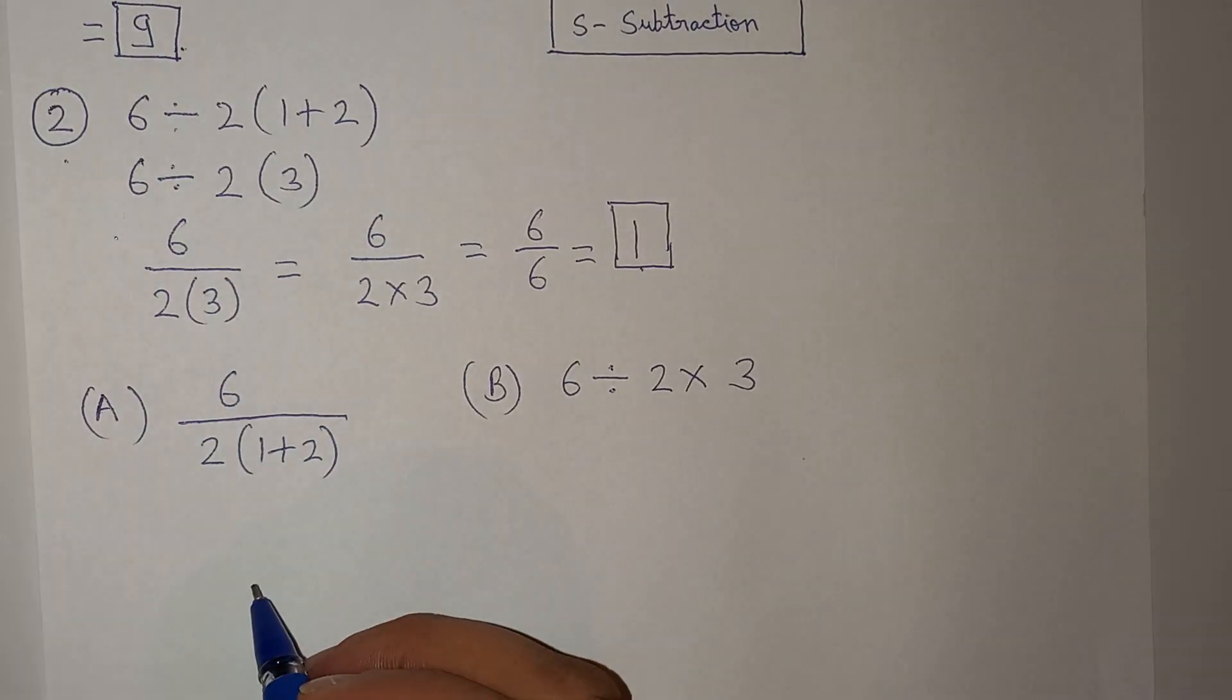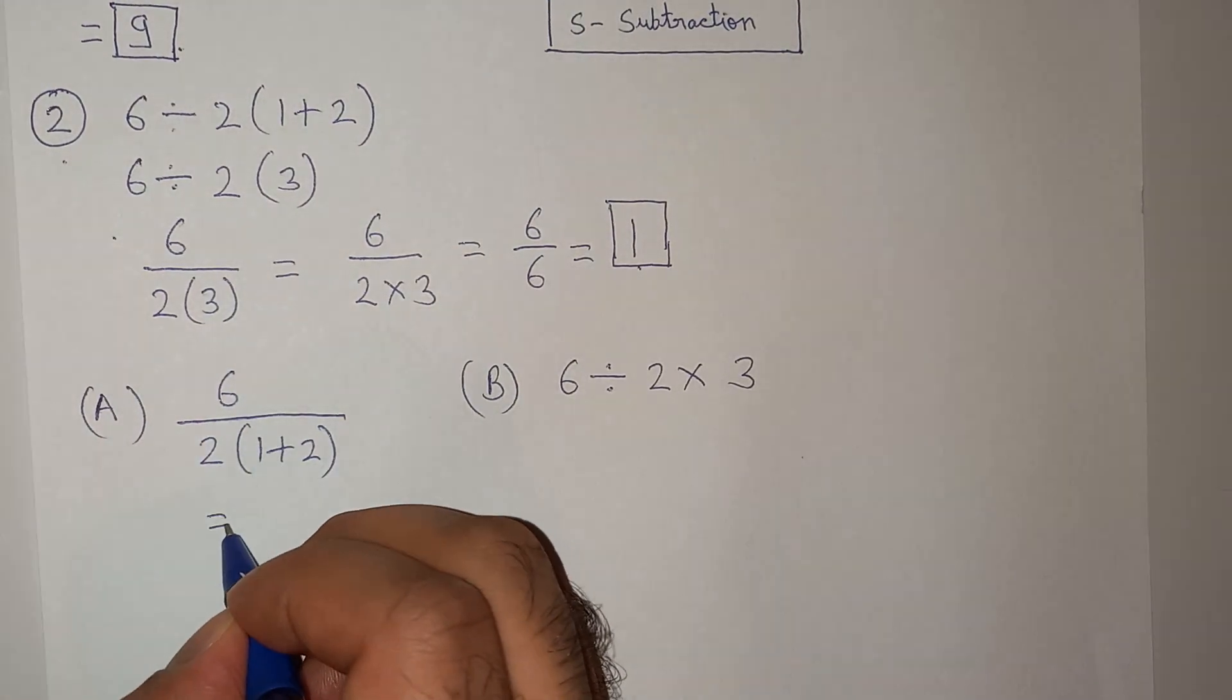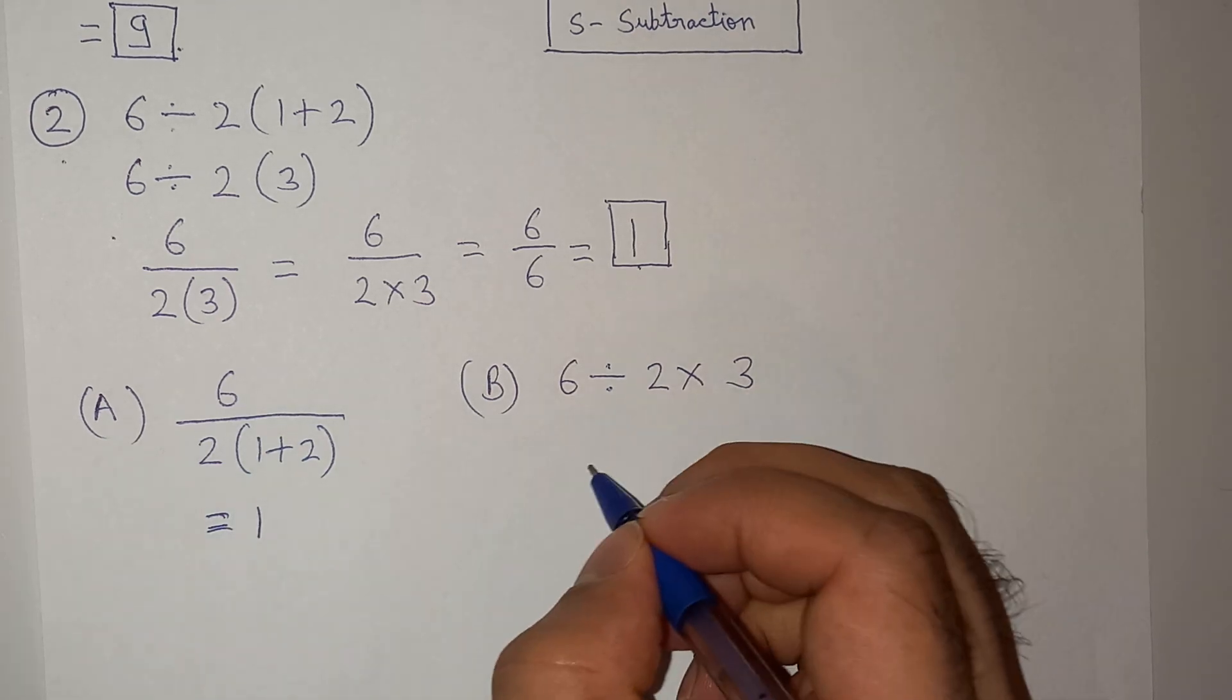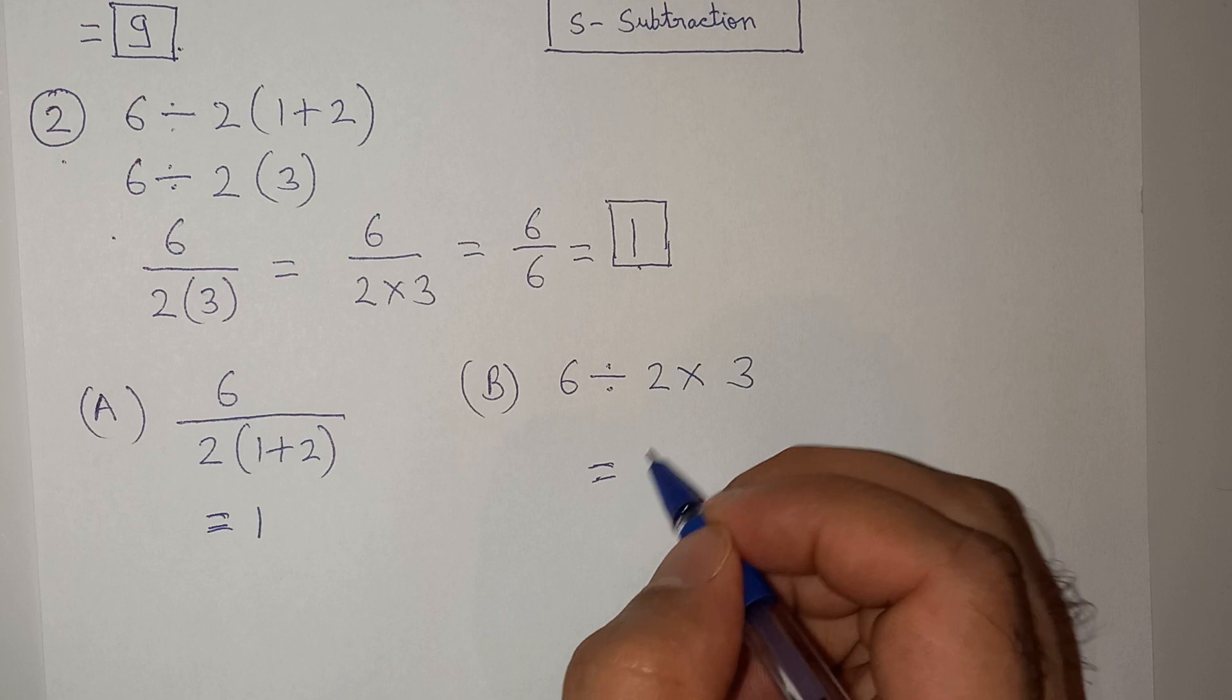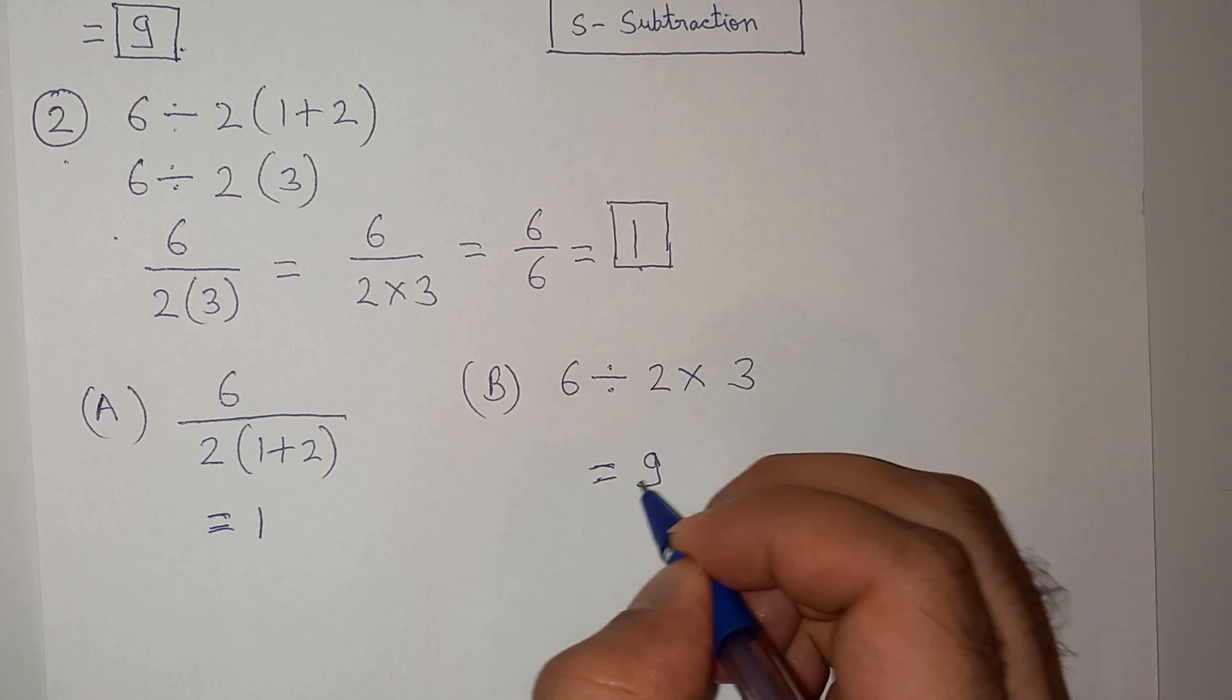If we had written the first version, then the answer would be 1. If we had written the second version, then the answer would be 9.